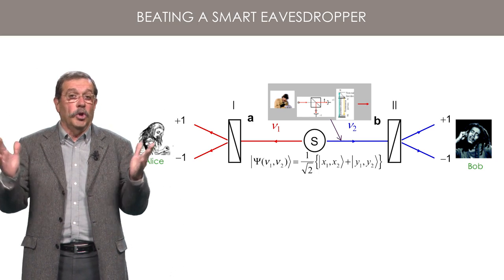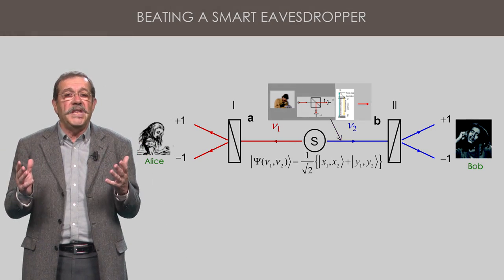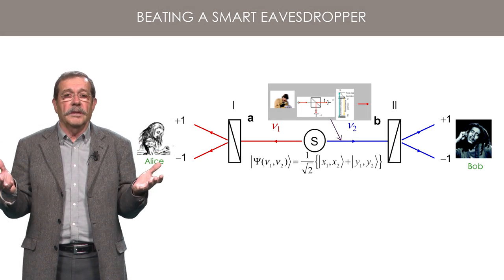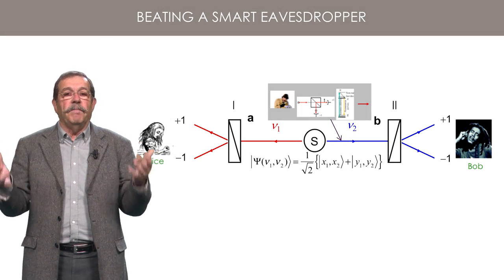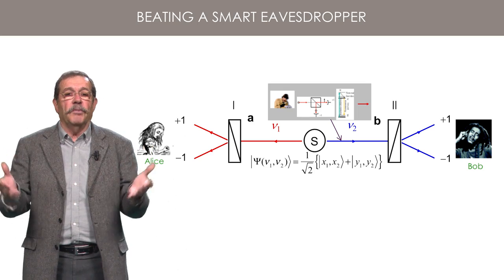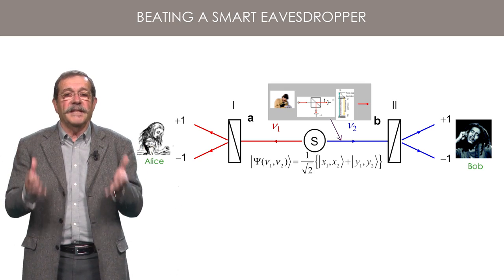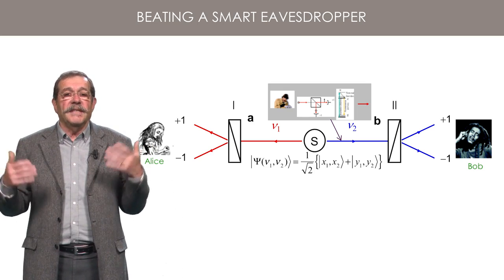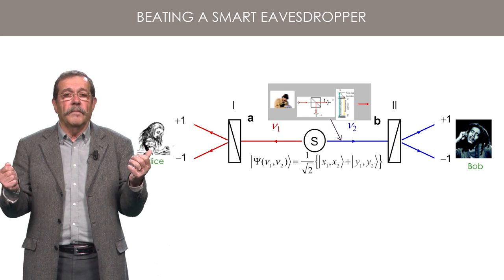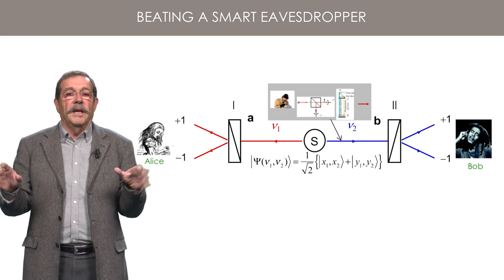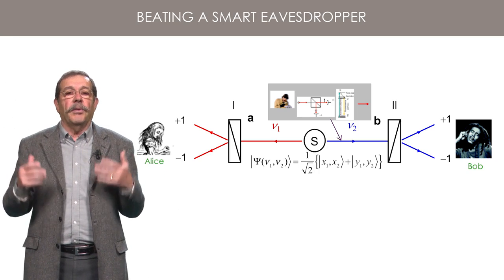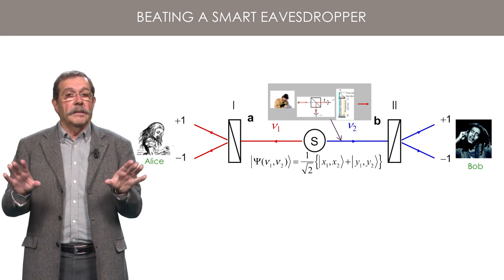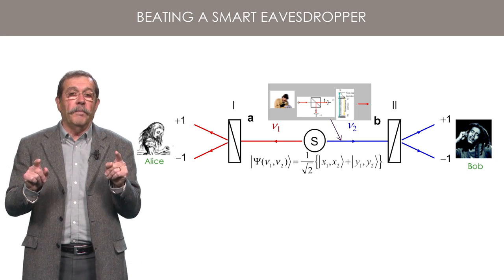He or she then sends a photon polarized along B, or perpendicular to B, depending on the result. He plays the role of the first measurement that collapses the entangled state, and both Alice and Bob will find the same result as him. As a result, the eavesdropper has a third copy of the key.